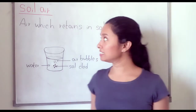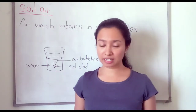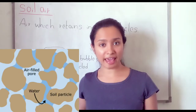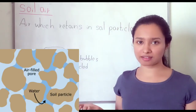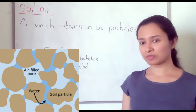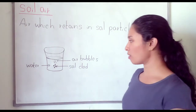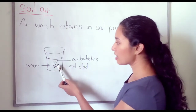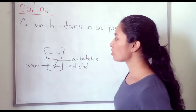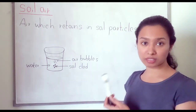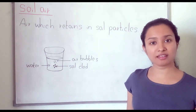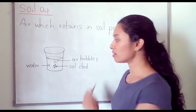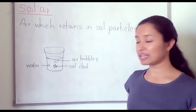Another soil component is soil air. Soil air means the air that remains in soil particles. When we put a soil clod into a glass vessel, we can see air bubbles releasing from the soil clod. That means the air contained in the soil clod is released as air bubbles.